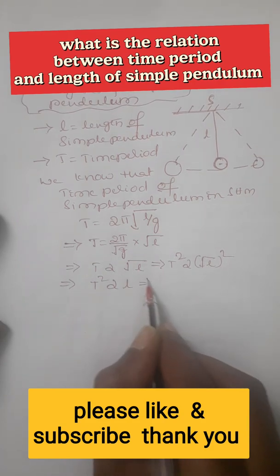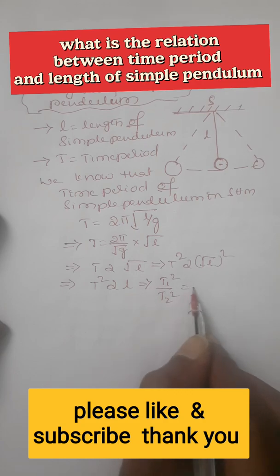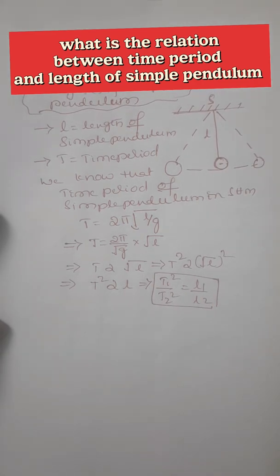This can also be written as t1 squared by t2 squared equals l1 by l2. This is the relation between time period and length of the simple pendulum.